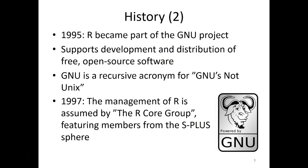In 1997, Ross and Robert found they had to put a lot of work into managing R with requests and questions from users. So the management was transferred to the R core group, which is a large group of people. Many members of the R core group come from the S-Plus sphere and work there during the day, managing R in their spare time — indicating there are no hard feelings between the two programs.